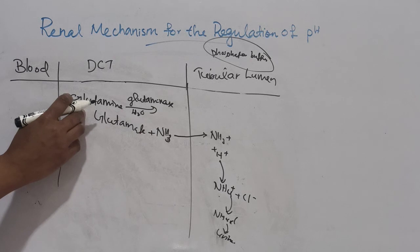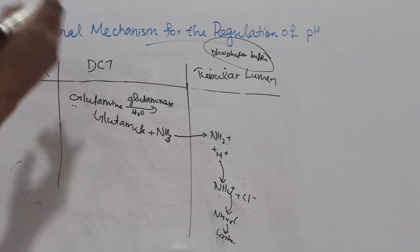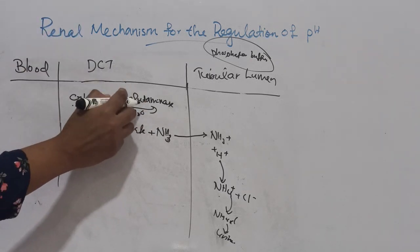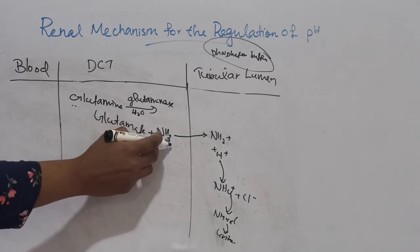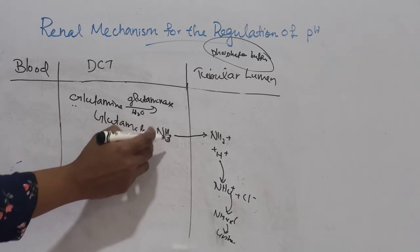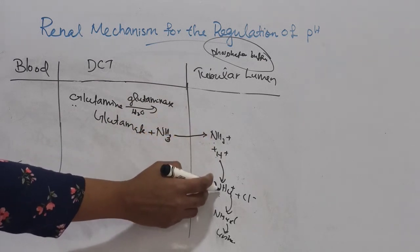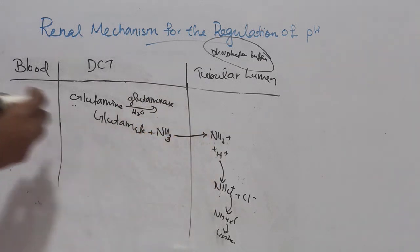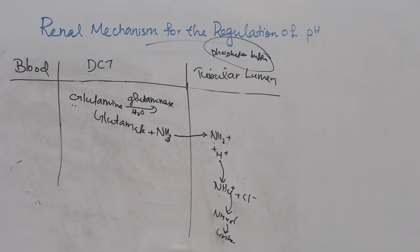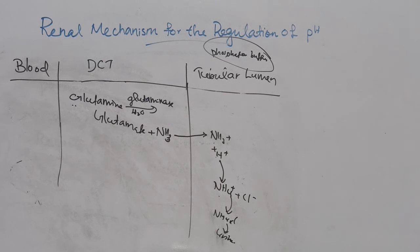Glutamine undergoes deamination with glutaminase to form glutamate and ammonia. As ammonia is diffusible, it enters the tubular lumen and combines with H+ to form ammonium ions, which then form ammonium chloride or ammonium phosphate and are excreted in urine. This is the fourth mechanism — excretion of ammonium ions. These four mechanisms together constitute the renal mechanism for the regulation of pH. Thank you for watching.